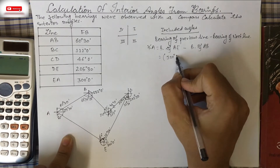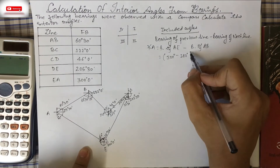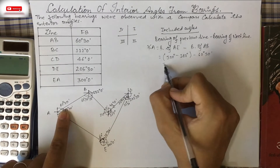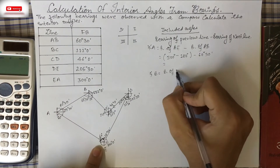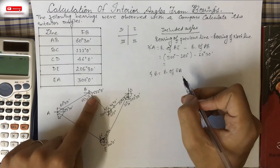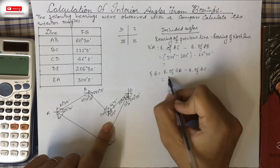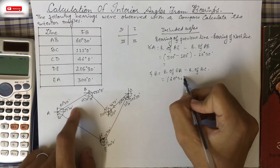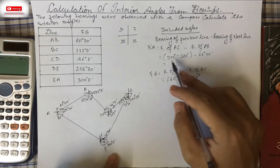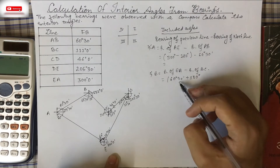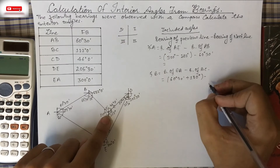For angle A: 300° − 180° − 60°30'. The rule is: if the bearing of the back-bearing (previous line) is less than 180°, add 180°; if more than 180°, subtract 180°. For angle B: bearing of BA minus bearing of BC, which is (60°30' + 180°) − 122°0'.